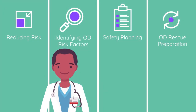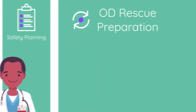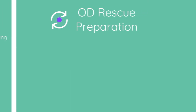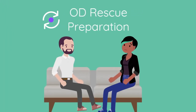Despite education and safety planning, opioid overdose may still occur. The fourth key strategy is overdose rescue preparation. The first step is to alert the patient to the possibility of overdose and the importance of having someone present who will be able to recognize the signs of overdose and who will respond quickly.